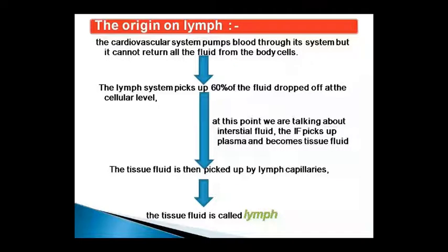Look at the origin of lymph movement. The cardiovascular system is pumping blood through the system, but it cannot return all the fluid from the body cells. Blood is pumped from the body cells but the remaining fluid cannot return via blood vessels alone. So the lymphatic system picks up 60% of the fluid that is dropped off at the cellular level — this dropped-off fluid at the cellular level is the interstitial fluid. 60% of the fluid dropped off is interstitial fluid.